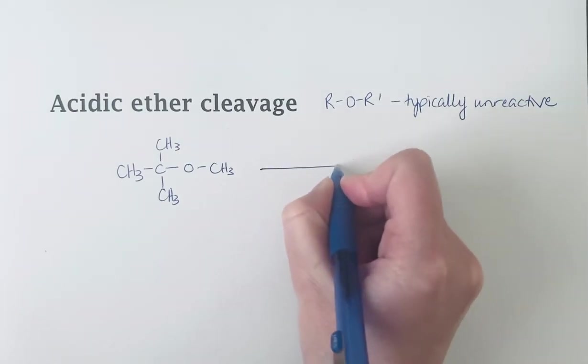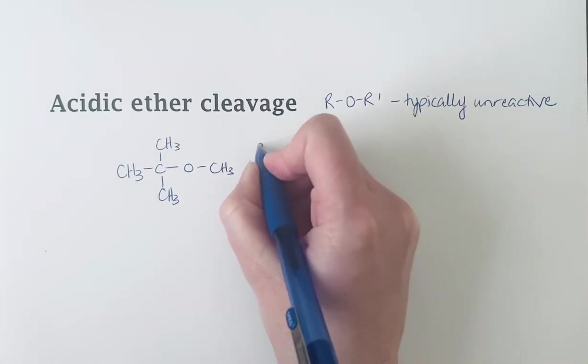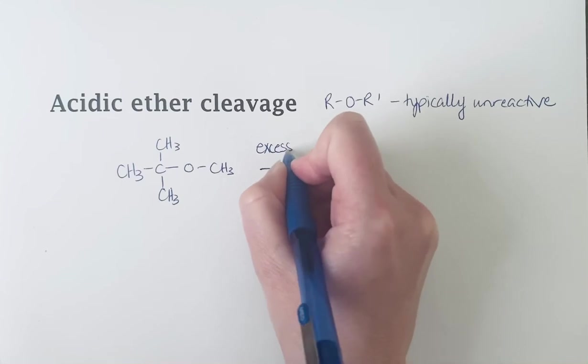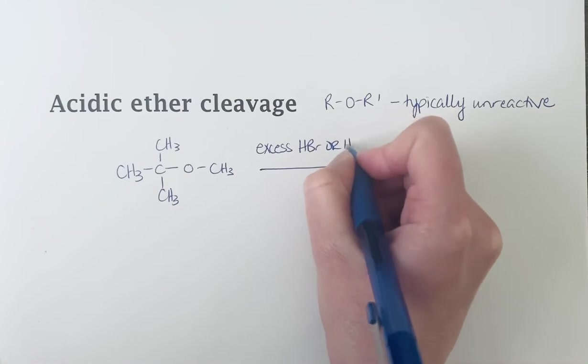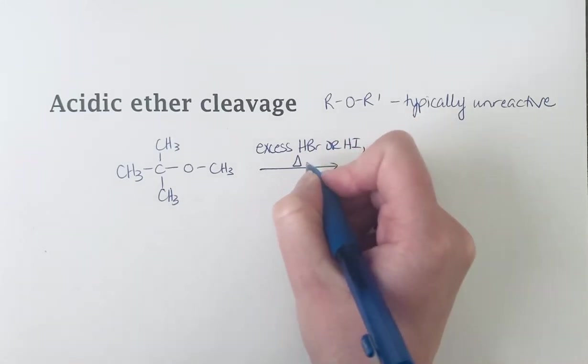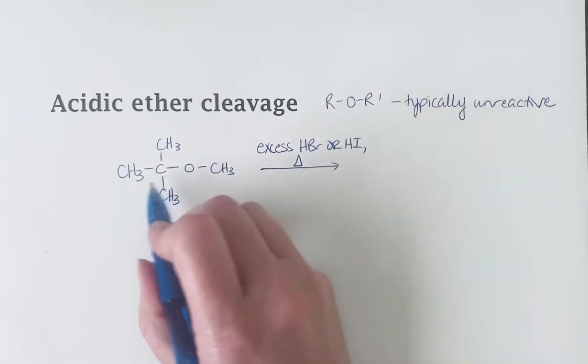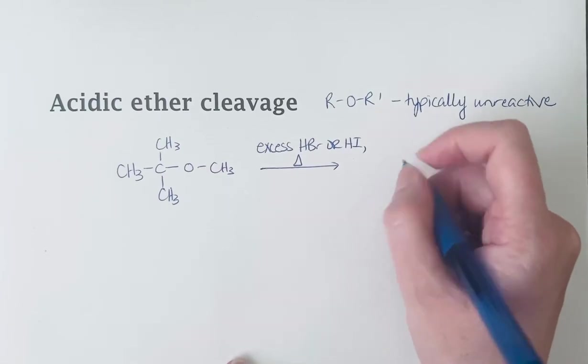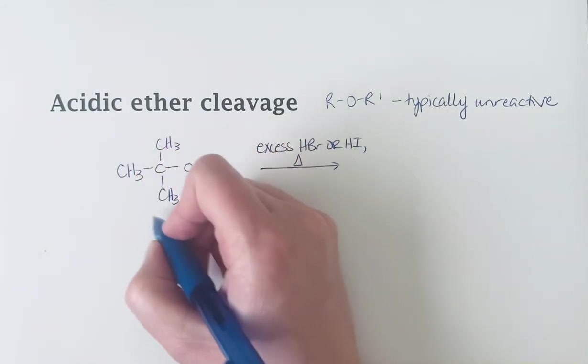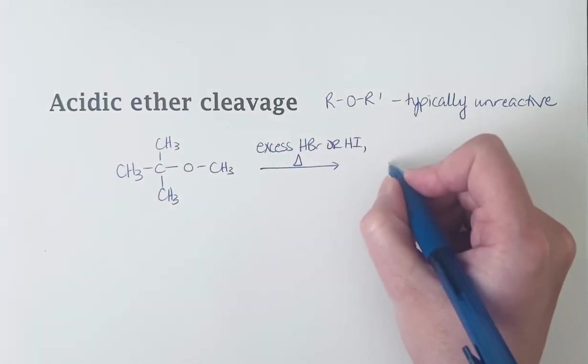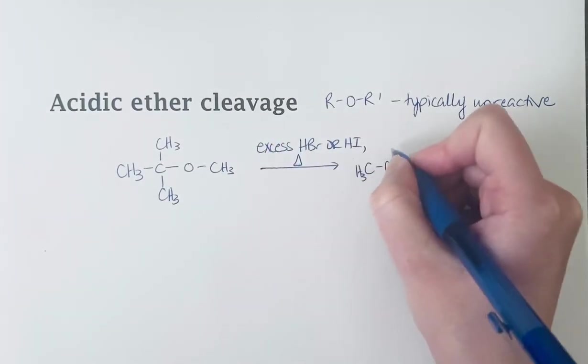If we were to take this and heat it up with an excess of either HBr or HI in heat, we would end up cleaving this ether. And what we would end up getting is two equivalents of alkyl halide. So we would end up with the tert-butyl halide and with the methyl halide.